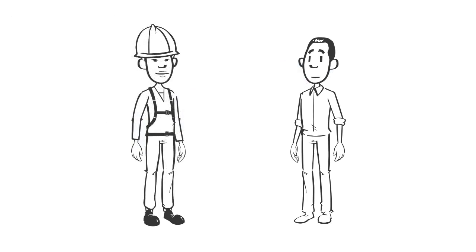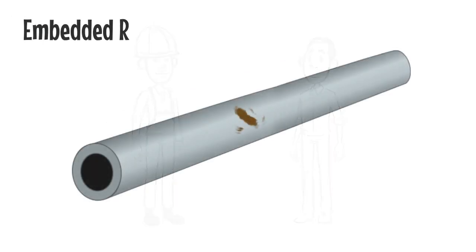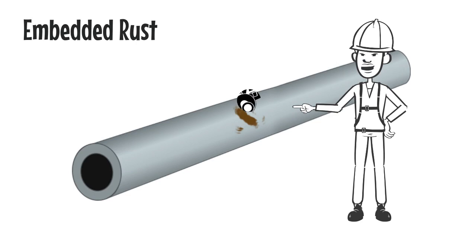So, from the sound of it, embedded rust is a bigger deal. Yes, embedded rust is a bigger deal since it has affected the original surface of the pipe. It needs to be remediated.